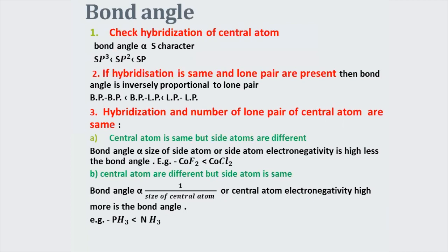Now let's see the tricks for bond angle. The first point is to check the hybridization of the central atom — as s-character increases, bond angle increases. For sp, bond angle is 180°; for sp², bond angle is 120°; for sp³, bond angle is 109.5°. If hybridization is the same, we then check for lone pairs. If lone pairs are present on the central atom, higher the number of lone pairs, lower the bond angle.